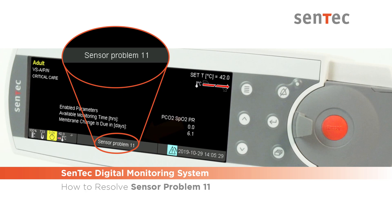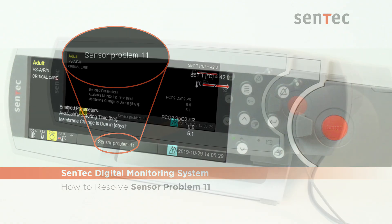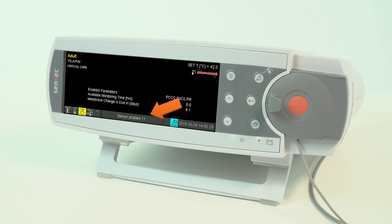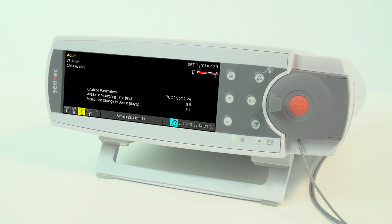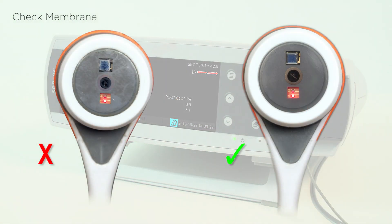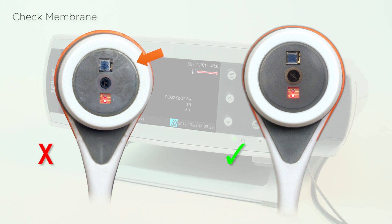This video will explain how to resolve a Sensor Problem 11 error message displayed in the status bar of the monitor. This error message is commonly caused by a defective membrane or dried electrolyte, as shown on the left.